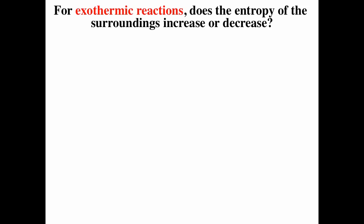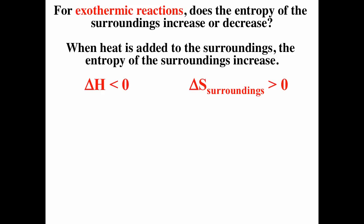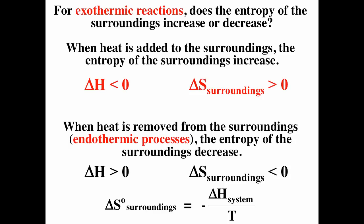For exothermic reactions, heat is transferred from the system to the surroundings, so ΔS_surroundings is positive (ΔH < 0). For endothermic processes, heat goes from surroundings to the system, so ΔS_surroundings is negative. Remember: only heat affects the entropy of the surroundings, so ΔS_surroundings = −ΔH / T.